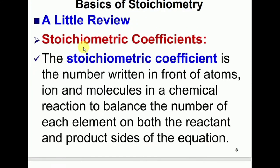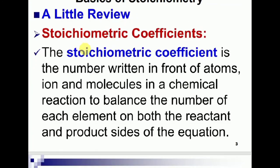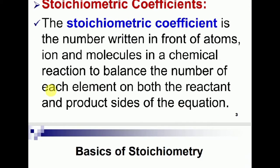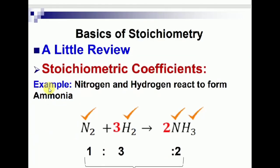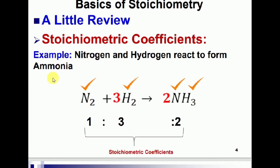The stoichiometric coefficient is the number written in front of atoms, ions, and molecules in a chemical reaction to balance the number of each element on both sides of the reaction. For example, nitrogen reacts with 3 hydrogen to form 2 ammonia — the coefficients 1, 3, and 2 are the stoichiometric coefficients used in this chemical reaction according to Haber's process.